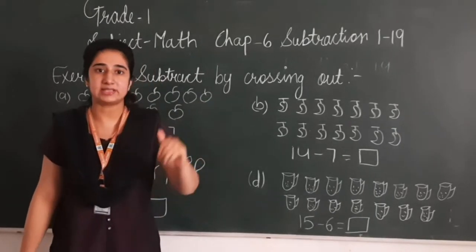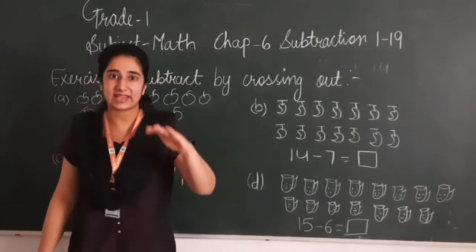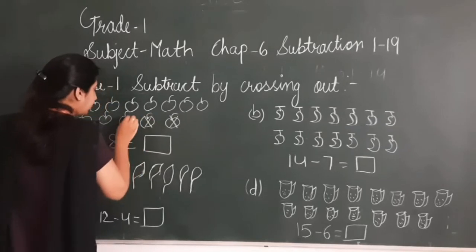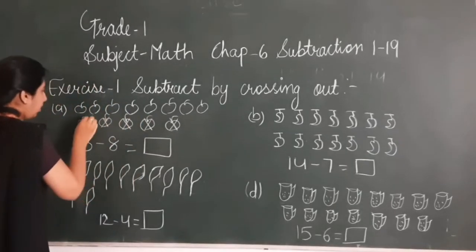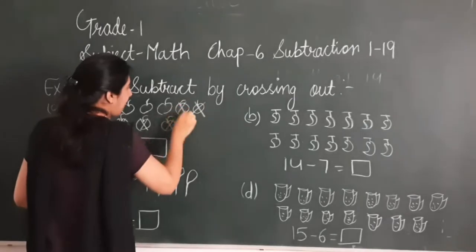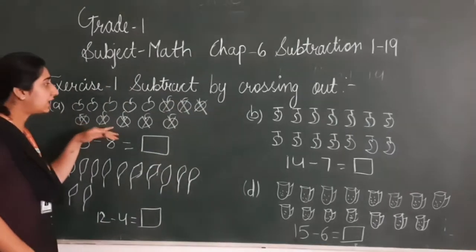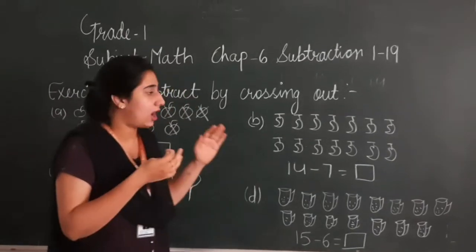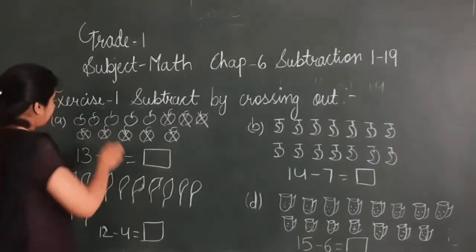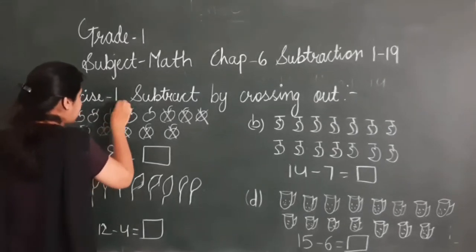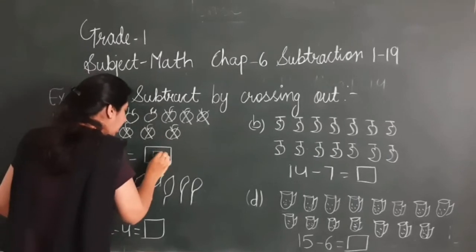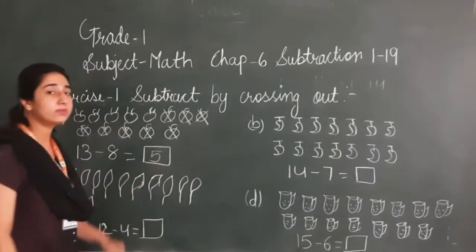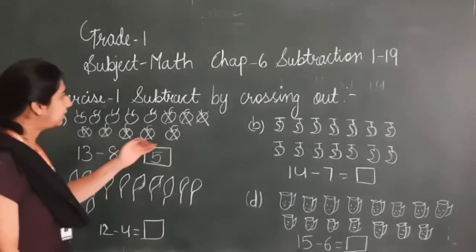Among those 13 apples, I will subtract. I will cancel 8 apples. I will cross them out: 1, 2, 3, 4, 5, 6, 7, 8. So I subtract 8 apples — that means I have given 8 apples to someone. Now how many apples are remaining with me? Let's count: 1, 2, 3, 4, 5.